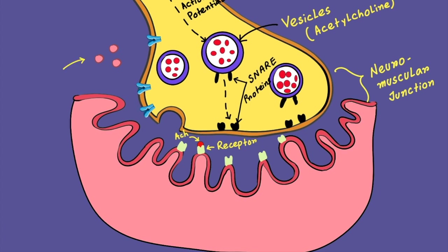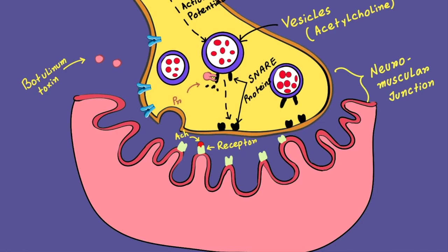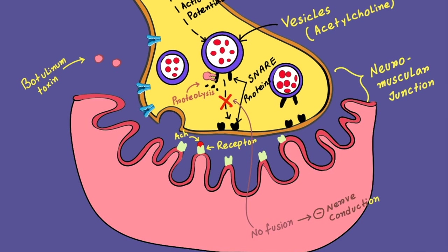Botulinum toxin is taken up by the cholinergic nerve endings — an important point is that it is not taken up by adrenergic nerve endings, only by cholinergic nerve endings. Inside the nerve, it proteolyzes or cuts down the SNARE proteins. So the fusion of vesicle and nerve membrane is hampered and there will be no exocytosis of acetylcholine. That is how botulinum toxin interferes with nerve conduction, resulting in flaccid paralysis.